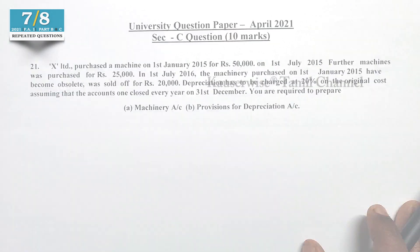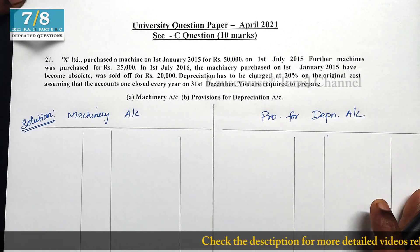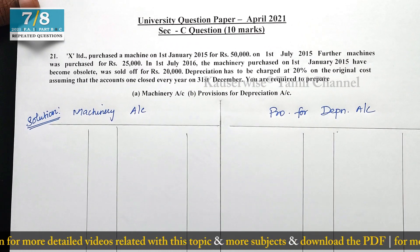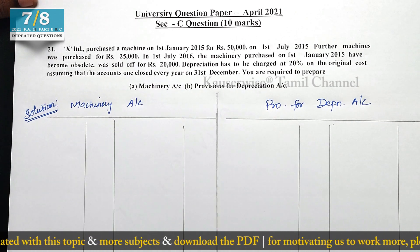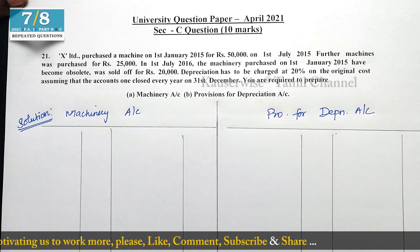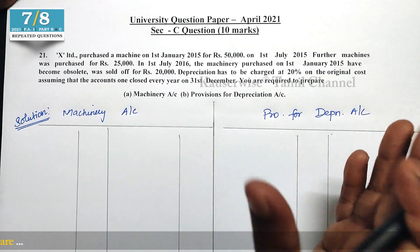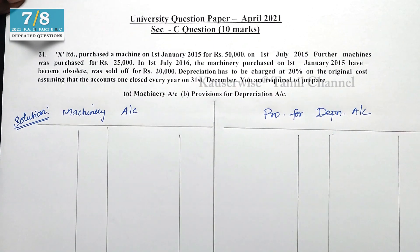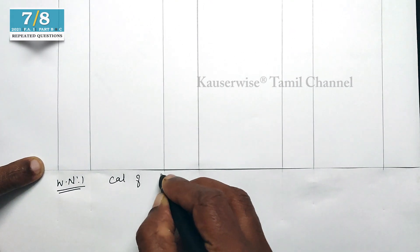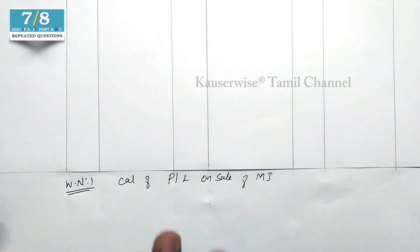First we do Working Note 1 to find out whether we get any profit or loss on the sale of the first machinery. So we will calculate the profit or loss on sale of Machine 1.